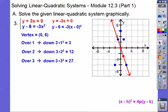So over 1, down 3. Over 2, down 3 times 2 squared, which is 12. I can't go down 27. So there's the parabola. This one's really obvious. It's going through right there at negative 1, 3. And it's going through at 2, negative 6 right there.